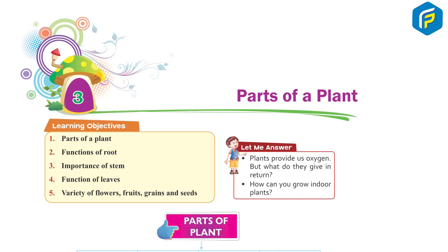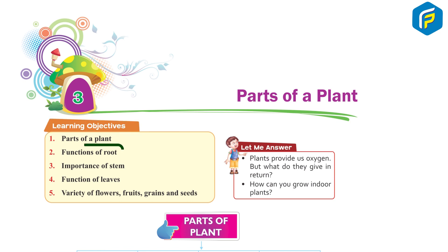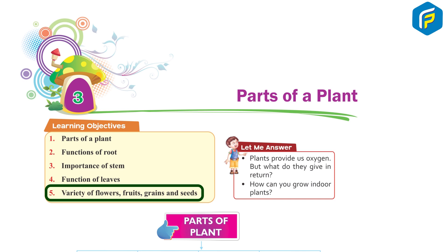Chapter 3: Parts of a Plant. Learning Objective 1: Parts of a Plant. 2: Functions of Root. 3: Importance of Stem. 4: Function of Leaves. 5: Variety of Flowers, Fruits.